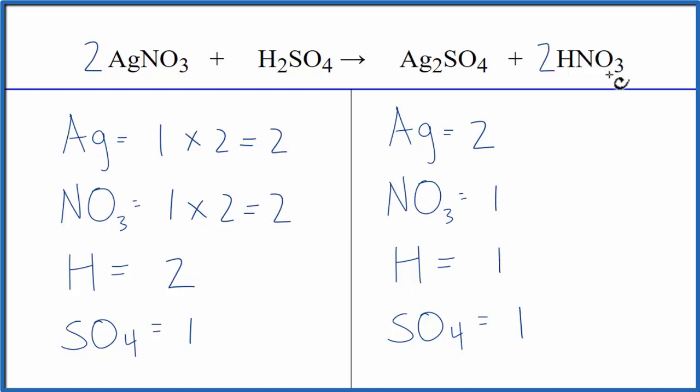So I could put a coefficient of 2. The 1 nitrate times the coefficient of 2 gives me two nitrates. Those are balanced, and then the hydrogen, 1 times 2, that gives me two hydrogens, and those are balanced.